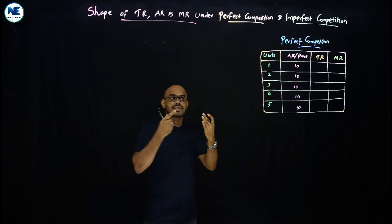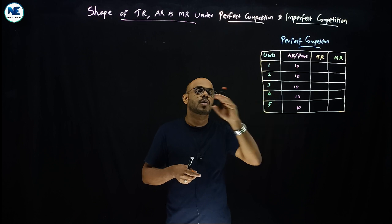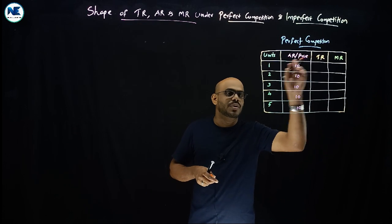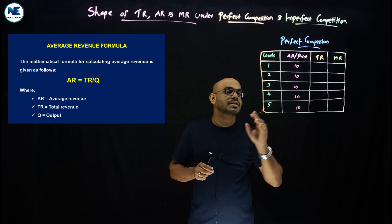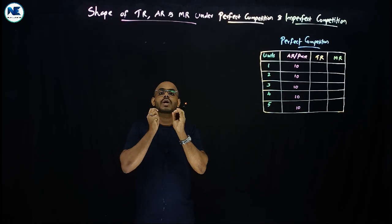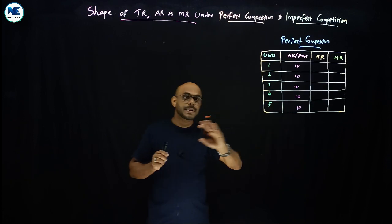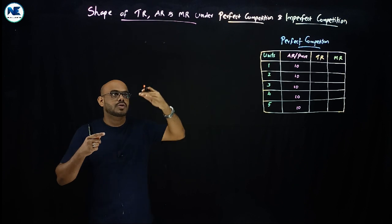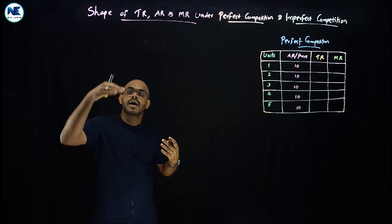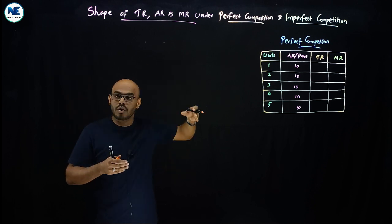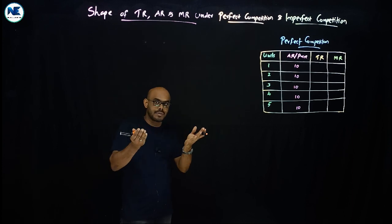In the table, units of commodity sold in the market are one, two, three, four, five. Average revenue is also equal to price. Under perfect competition, price should be the same for all products — a uniform price. The demand curve is downward sloping, and marginal revenue lies below the average revenue curve.